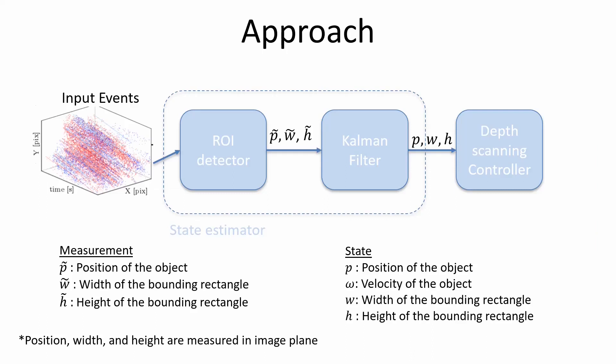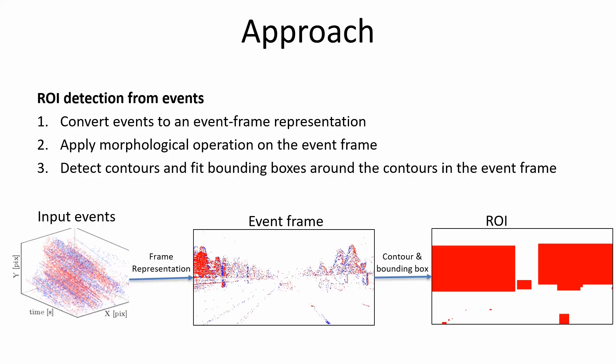We now explain the ROI detection. The events are first converted to an event frame representation. We apply the morphological operation of dilation and detect contours on the image. For each contour, we fit a rectangular bounding box around it in the event frame.